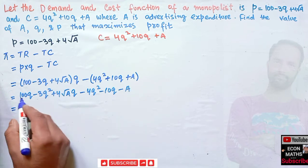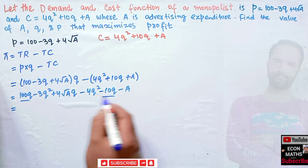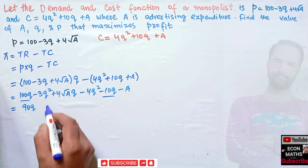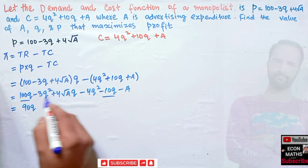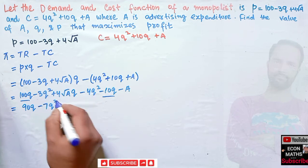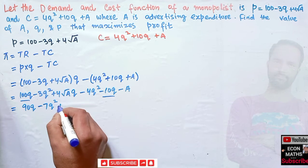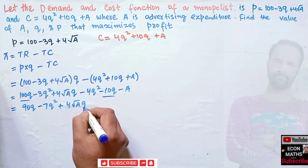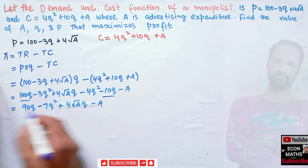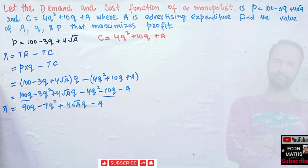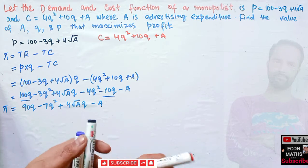Rearranging the profit function: 100Q − 10Q = 90Q. For the Q² terms: −3Q² − 4Q² = −7Q². Then we have plus 4√A·Q, minus A. So the profit function for the monopolist is: π = 90Q − 7Q² + 4√A·Q − A.